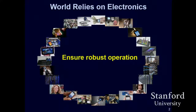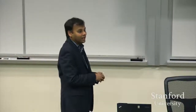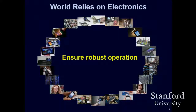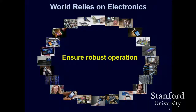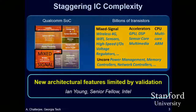We know that there is an explosive growth in our dependency on electronic systems. At a meeting of the National Academy, they were talking about societal-scale problems — water, world hunger, education — and everybody said the only way to solve those problems is through information technology. But when you are going to plant electronics inside your body to monitor and actuate and do all sorts of things, you do not want that thing to just crash. We must ensure robust operation.